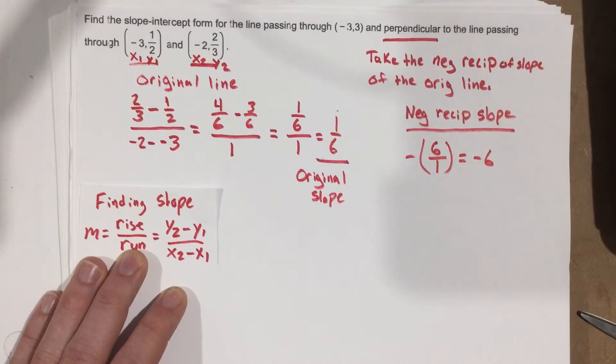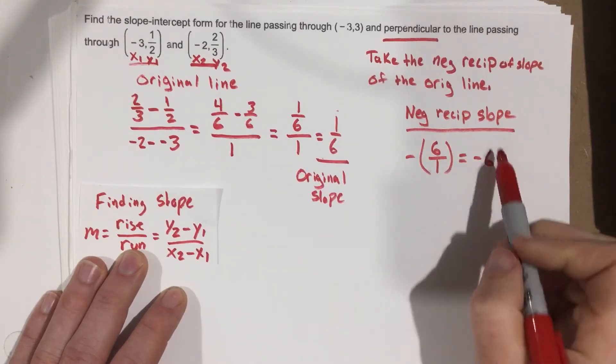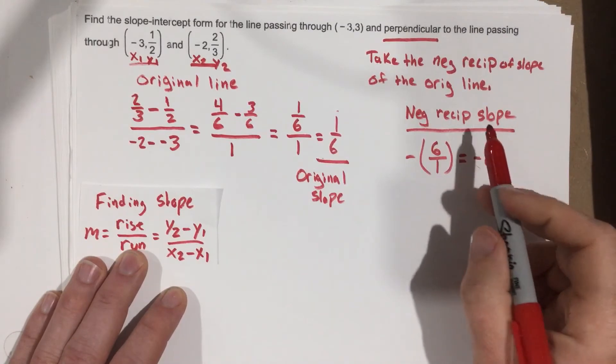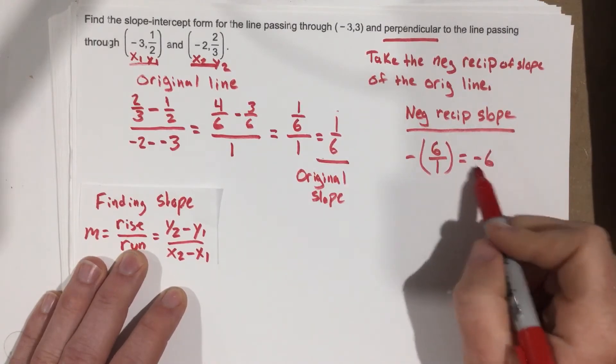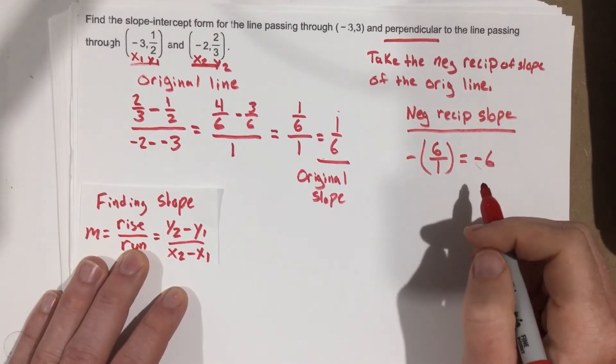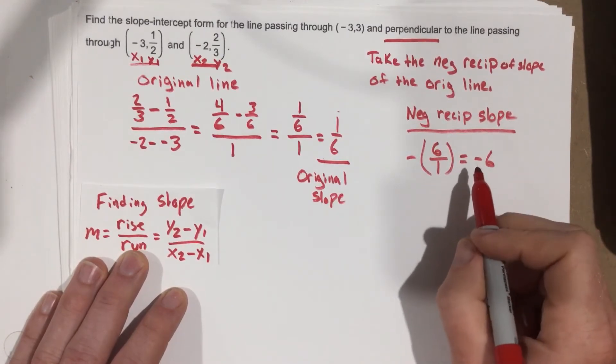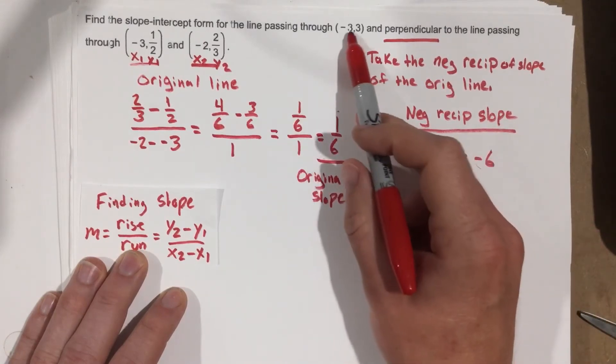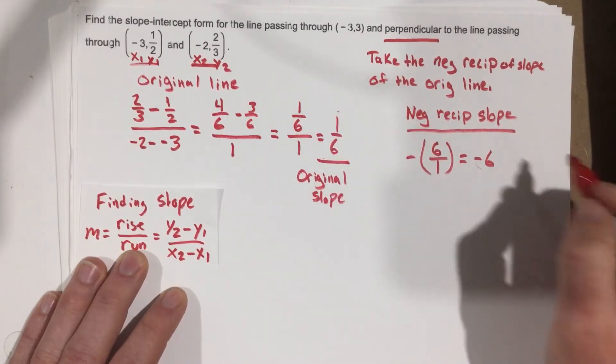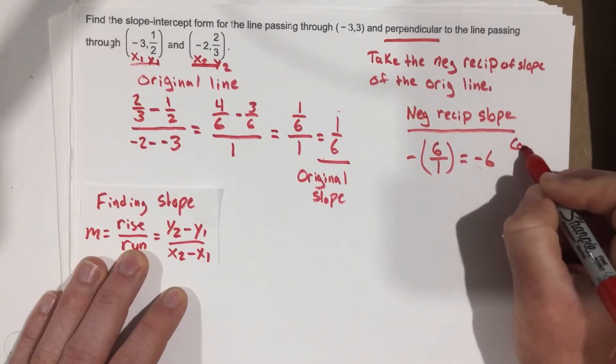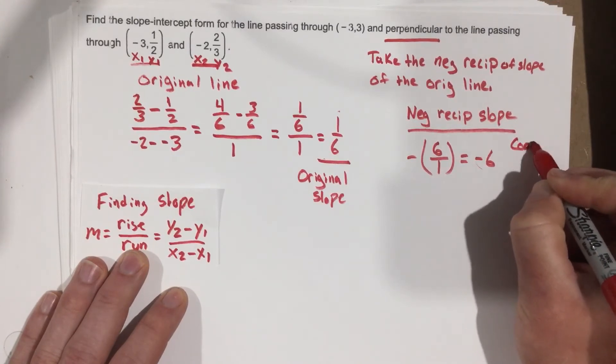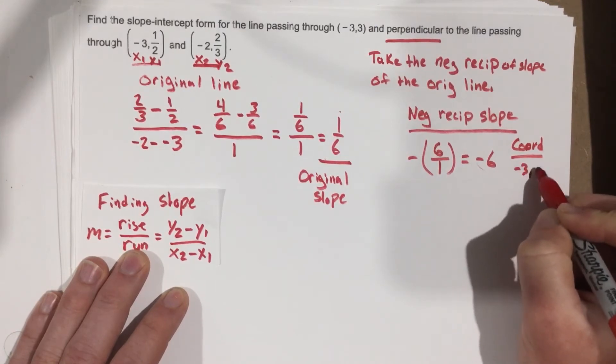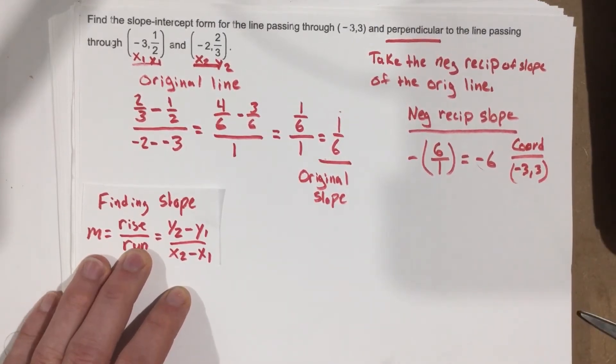Once I have the negative reciprocal, remember, I want the negative reciprocal slope for this new line. The new line that is going to use the negative 6, which is the negative reciprocal slope. I want that new perpendicular line to go through (-3, 3). So the coordinate that I'm going to use is (-3, 3).